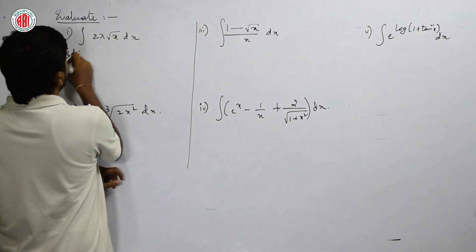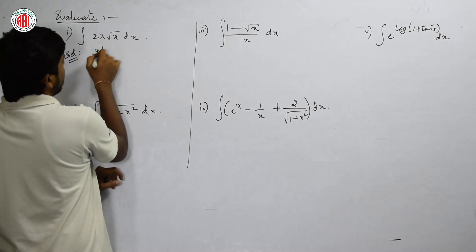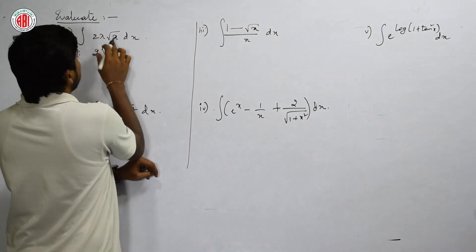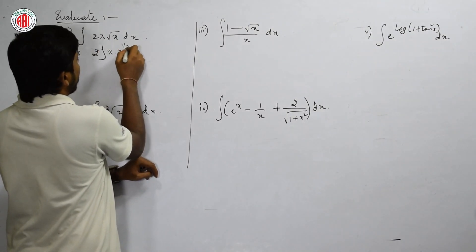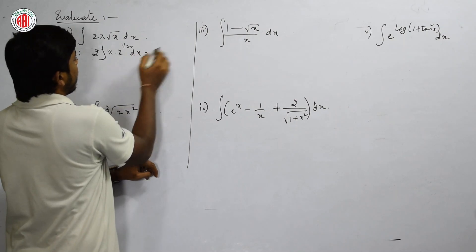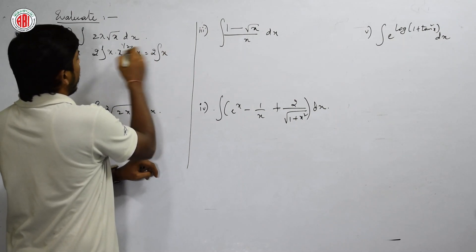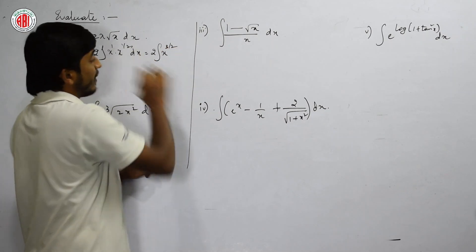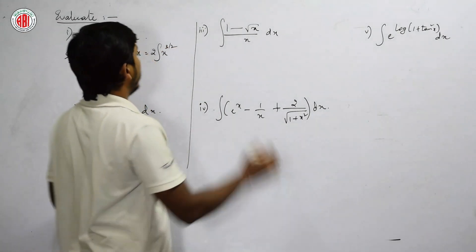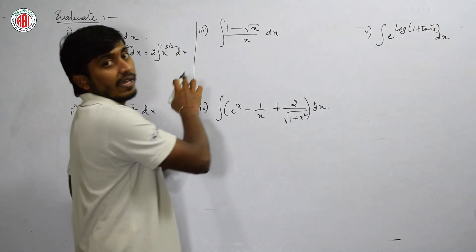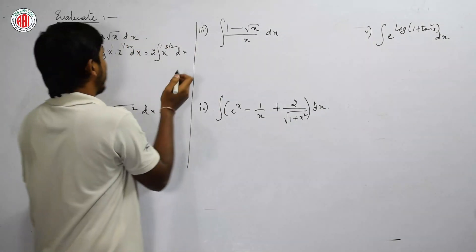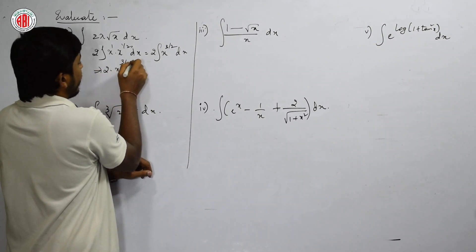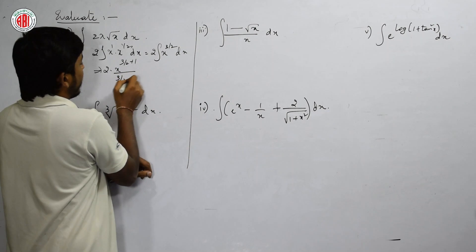The integral of 2x√x can be written as: 2 is a constant, and √x can be written as x^(1/2). So we have 2 · x · x^(1/2). Since bases are equal, powers are added: 1 + 1/2 = 3/2. So this becomes ∫2 · x^(3/2) dx. This is in the form of x^n.